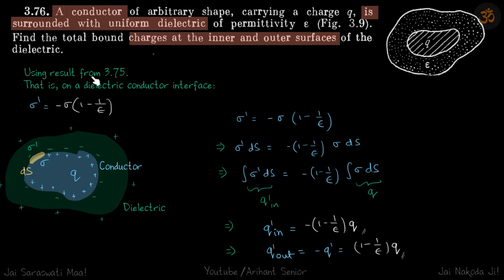We will use our previous result which we just derived that if we have a dielectric conductor interface then the relation between their charge densities is sigma dash is equal to minus sigma into one minus one by epsilon.